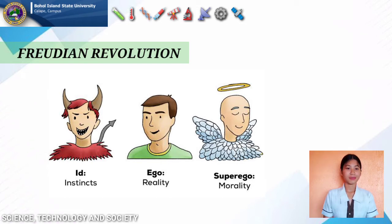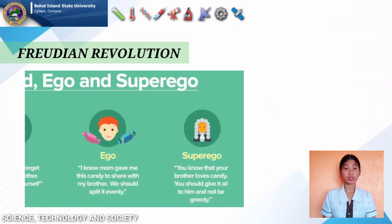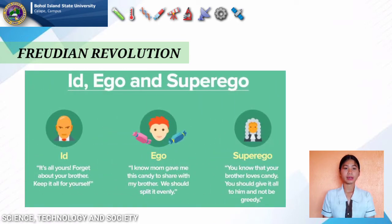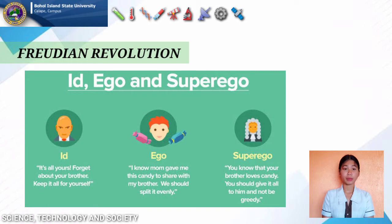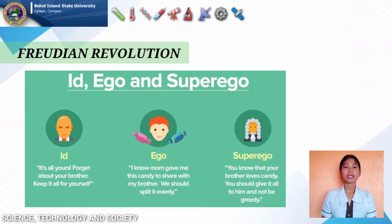The superego is the makadiyos. Its personality strives for perfection and has always been good and honorable. In the example shown, the id acts selfishly, saying 'It's all yours, forget about your brother, keep it all yourself.' The ego responds: 'I know mom gave me this candy to share with my brother, we should split it evenly.' The superego speaks: 'Your brother loves candy, you should give it all to him and not be greedy.'